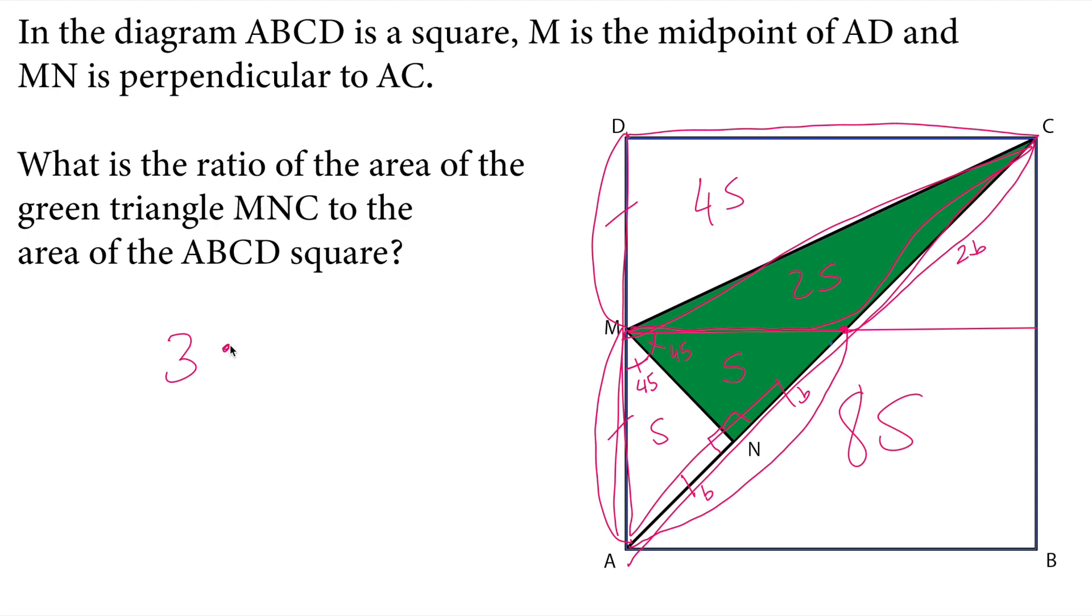So if you write our ratio, it will be three S, the green triangle and the total square will be 16 S, so S will be canceling each other, so the ratio of green triangle to square will be three to 16 as a result of this problem.